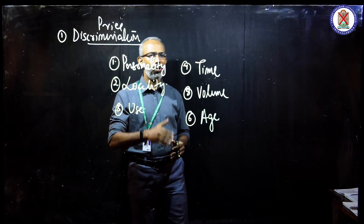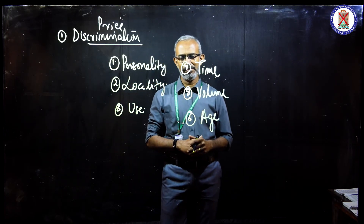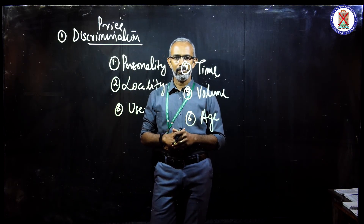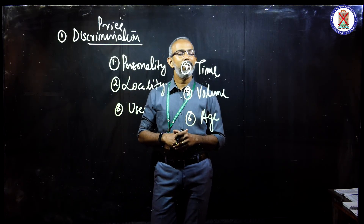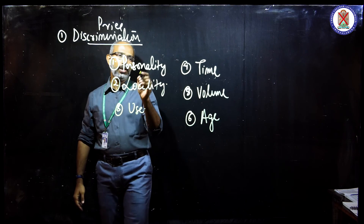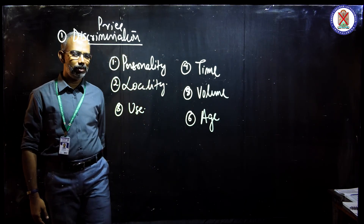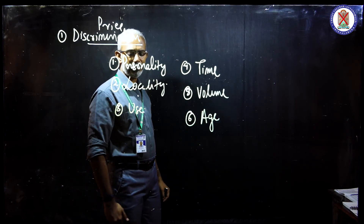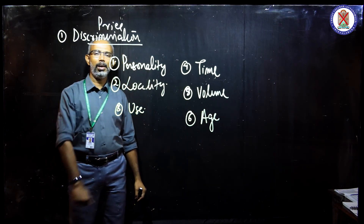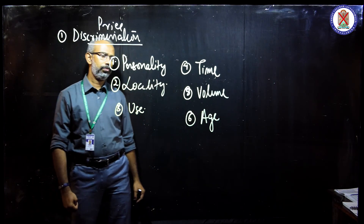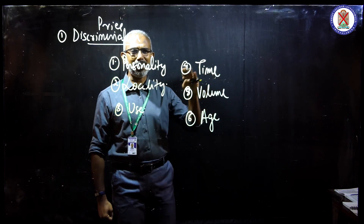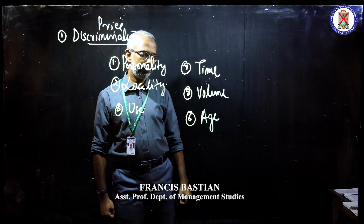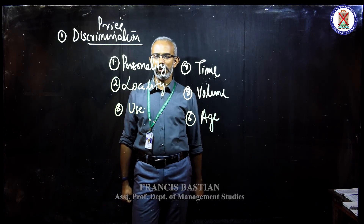We have come across all six different types of discriminatory pricing. To sum it up: the first was personality-oriented discriminatory pricing; second is locality-based discriminatory pricing; third is discriminatory pricing based on use; fourth is based on time; fifth is based on volume; and the last is based on age. Thank you.